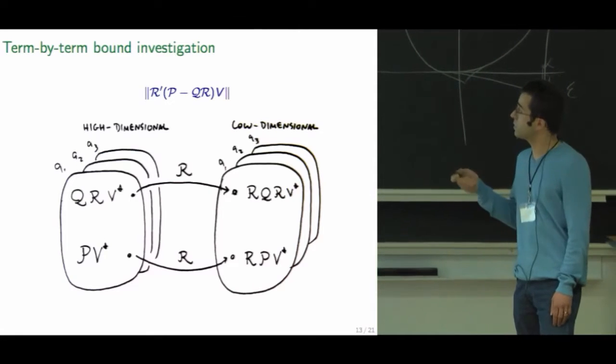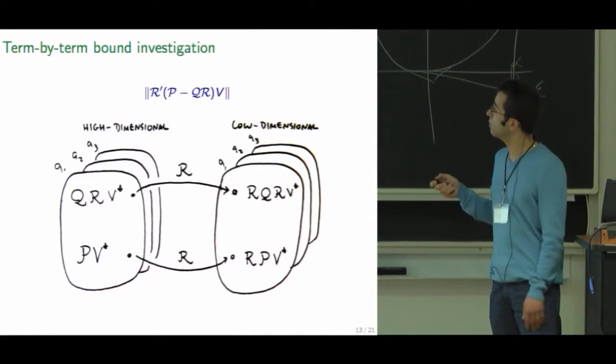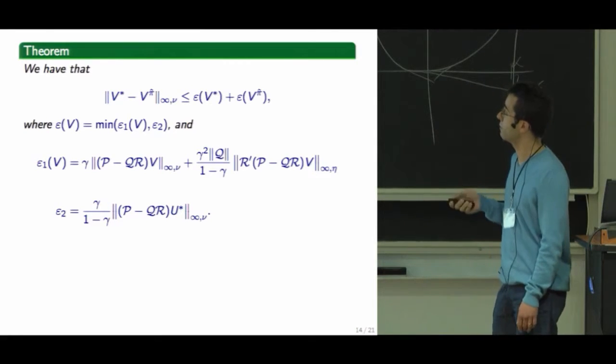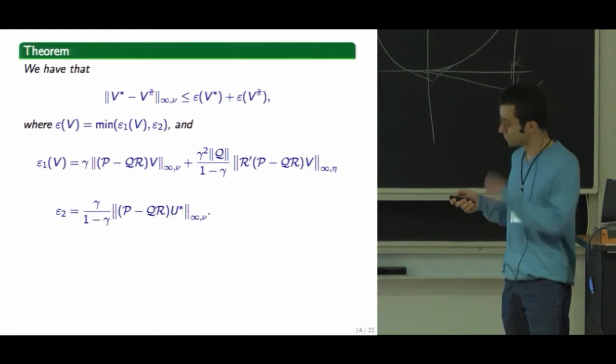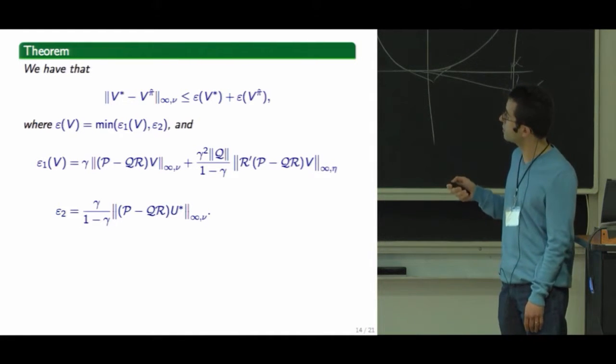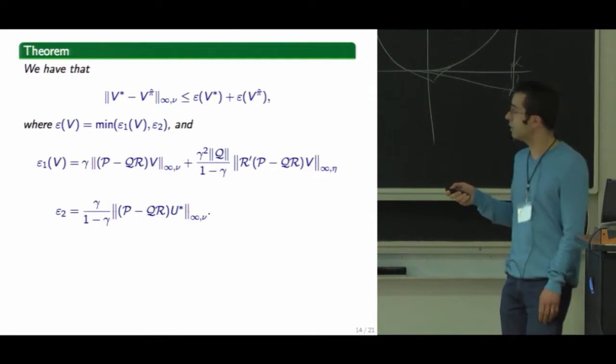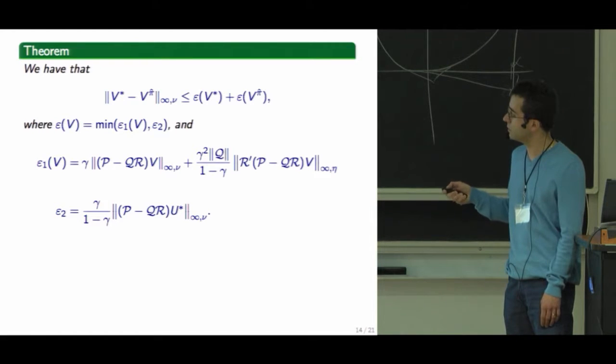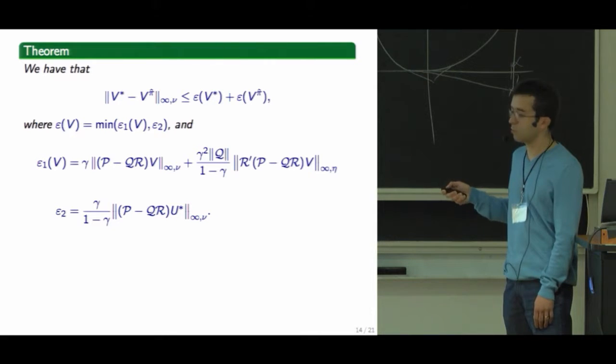The next error term that shows up is similar to the previous one. Just take this reconstruction and then compress it down to the low dimensional space. And this is the bound that we have. The a priori terms are the ones that depend on v star and v pi hat. We have the high dimensional reconstruction error, the low dimensional reconstruction divided by one minus gamma, which is usually the term that tends to be bigger in the bound.